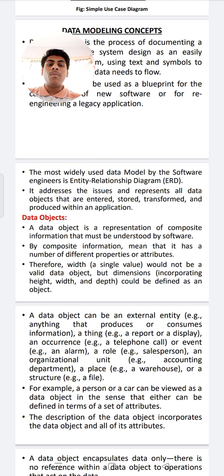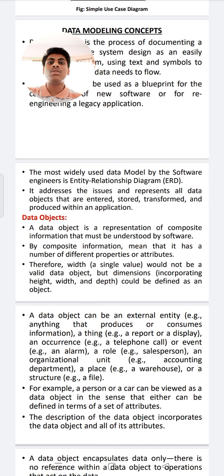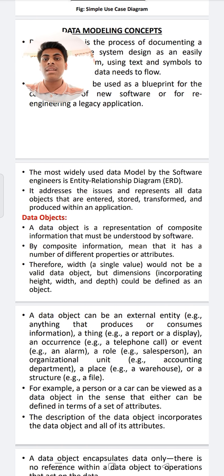The most widely used tool in software engineering is entity-relational diagrams. Using any software data, we can easily understand the graphical representation of a project. In this manner, it addresses how you should represent all the data objects that can be stored, transferred, centered, and produced in your application. Data modeling concepts are of three types: data objects, data attributes, and relationships.